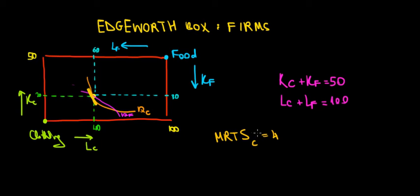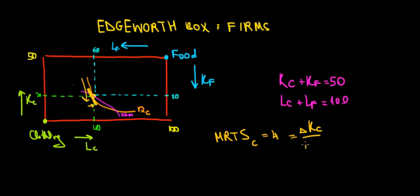So the marginal rate of technical substitution at that specific point for the clothing company is equal to 4. What does this show us? It shows us how much capital we're willing to exchange for one more unit of labor — the change in capital for the clothing company relative to the change in labor for the clothing company.